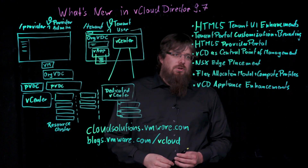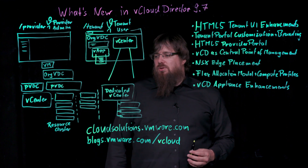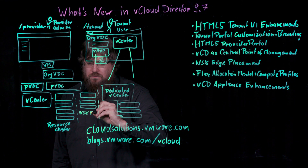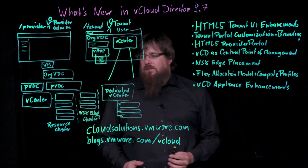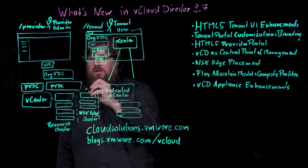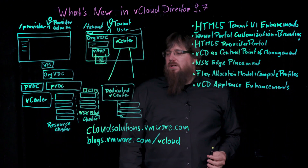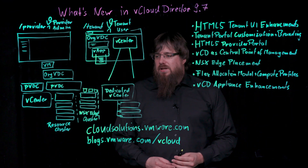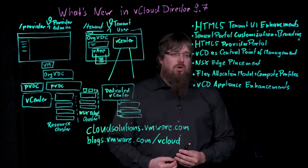Another new functionality in 9.7 is enhancements for the NSX-edge placement. It is now possible to create specific NSX-edge clusters and configure them in vCloud Director, so that vCloud Director places all the NSX-edge virtual machines — created as part of the vApp and network automation of vCloud Director — into that Edge cluster. This is possible either on a global basis, or you can specify different edge clusters on a per-tenant basis.